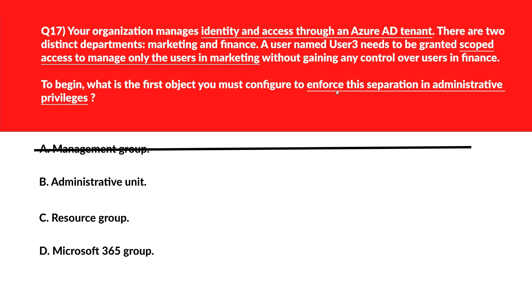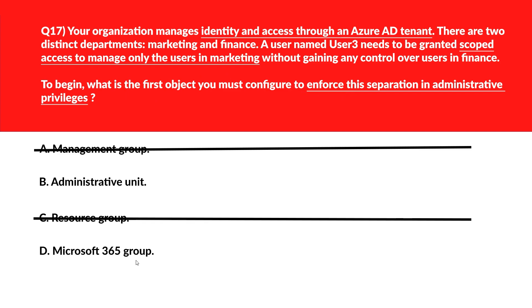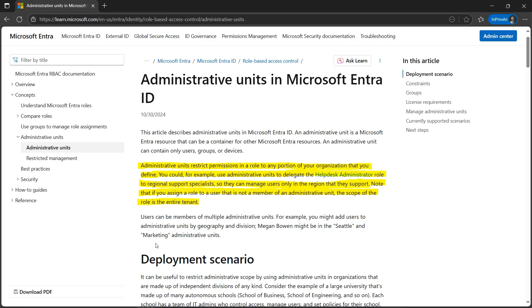Option C: Resource Group supports infrastructure grouping for RBAC but doesn't support identity management within Azure AD. Option D: Microsoft 365 Group provides collaboration features but doesn't directly influence administrative boundaries.